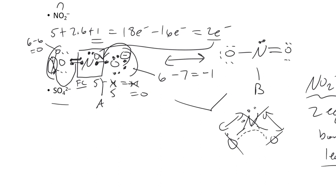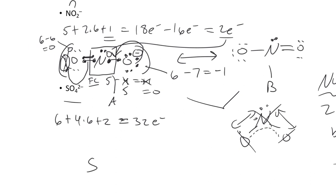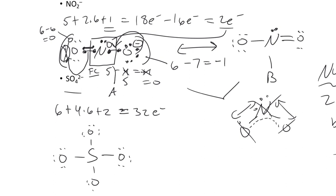Sulfate has a couple of different Lewis structures we can sketch. For sulfate: 6 plus 4 times 6 plus 2, giving 32 electrons. Sulfate should look like a central sulfur with four oxygens and lone pairs on the O's — following the usual rules, attach the non-centrals to the central atom and give them an octet. That's all 32 electrons, so no lone pairs for sulfur.